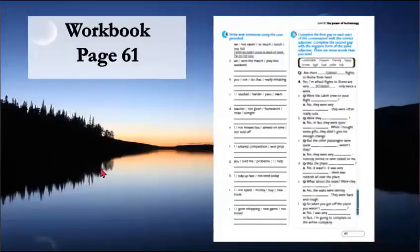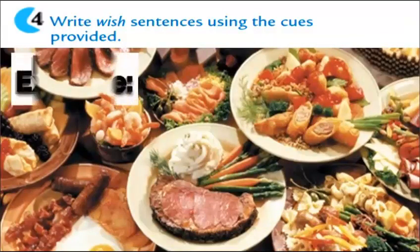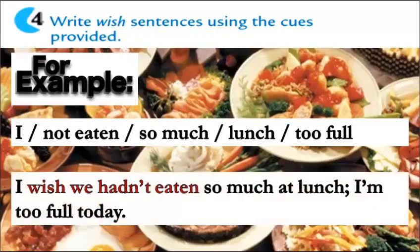Exercise number four on page 61 — you have to use wish sentences using the cues provided. For example: 'I not eaten so much lunch, too full' — here we have to complete or make a meaningful sentence using wish. It will be like this: 'I wish we hadn't eaten so much at lunch — I am too full today.' We use the cues provided to make a full sentence using wish.